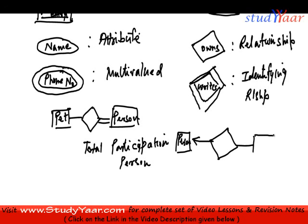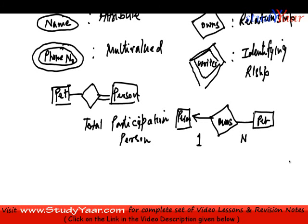Person owns a pet. So this means this is one and this is n. Any side which has an arrow means it has a single participation. And any side which doesn't have an arrow means it has multiple participation. So this thing means one person owns a pet.